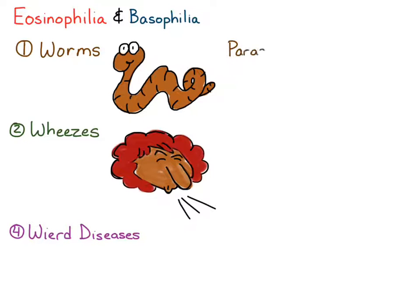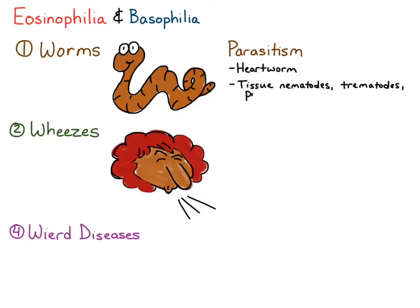First, with worms — it's not just worms, but worms is supposed to represent tissue parasites in general. So that includes heartworm disease, nematodes, trematodes, and protozoa that infiltrate and invade the tissues. Usually parasitism that is restricted to the GI lumen does not cause eosinophilia and basophilia. There has to be active tissue migration or invasion.